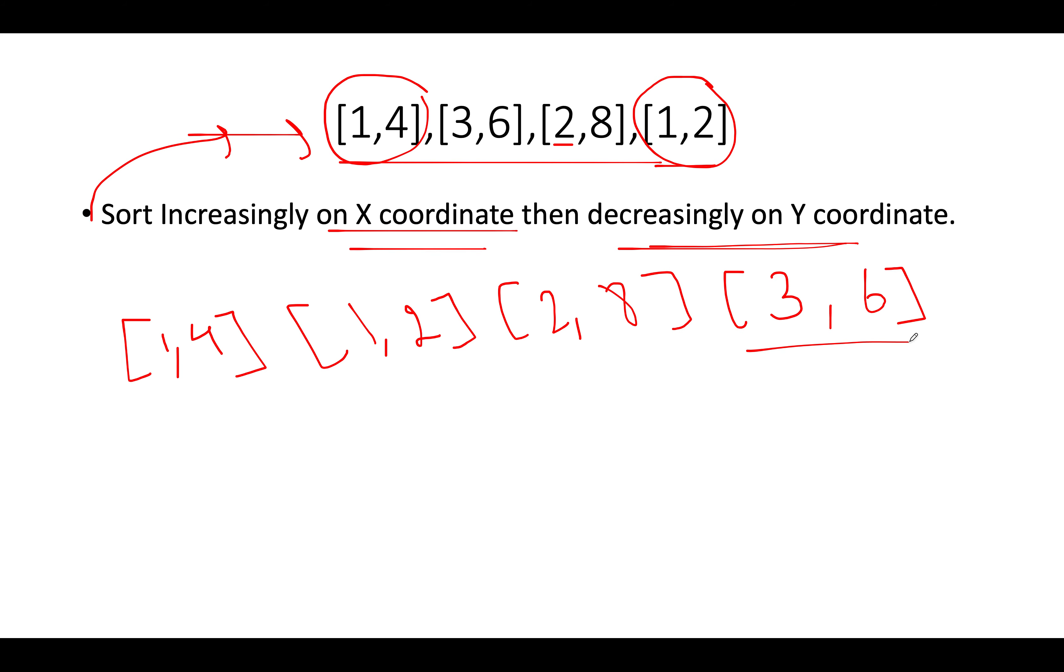Now if you carefully observe this updated array, you can simply assume that all the elements in this array would be in the increasing order of x coordinate. We have increasing x here, one, one, then we have two, then we have three. So we can simply eliminate the x coordinate here and we don't need to do any manipulation over it. The area of interest would remain in the y coordinate.